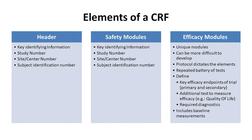Even though data collection forms are based on the protocol, they usually contain certain categories or data modules along with key identifiers, such as the site identification number, protocol number, and unique patient identifier. These modules include the header, which usually includes key identifying information, study number, center number, and subject identification number.